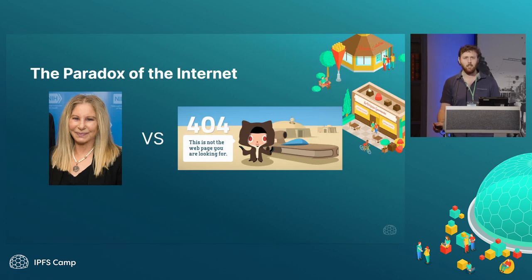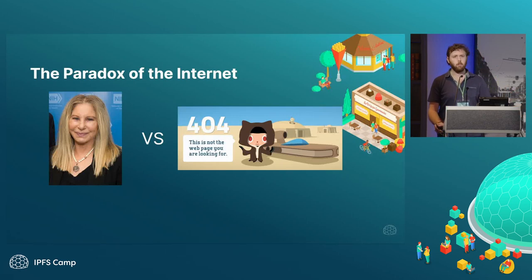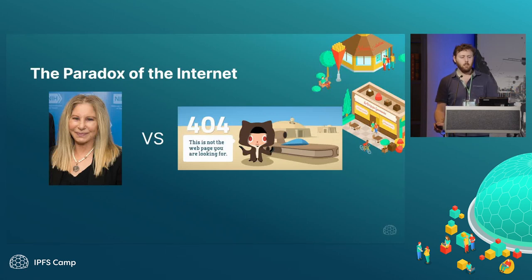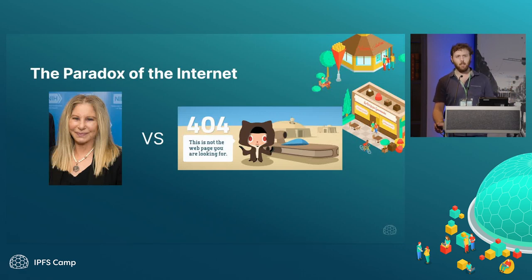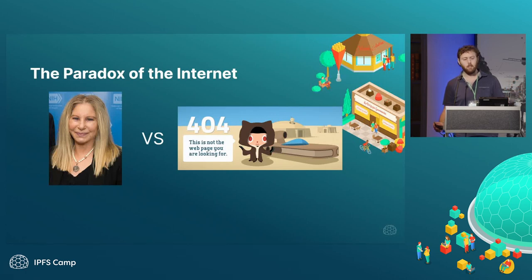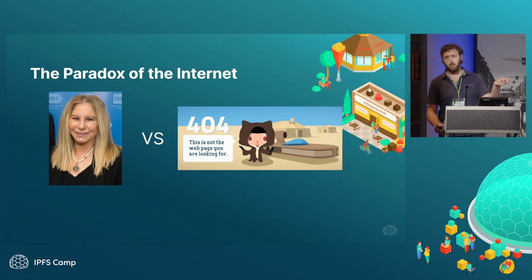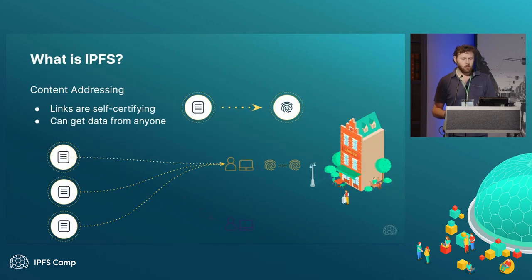One answer for this is that the way we refer to information is based on where it is, or based on a specific custodian who is in charge of making the data available. Like imager.com slash cat picture — it's imager's responsibility to make that cat picture available. So lots of people can make it available, which makes it hard to stomp out. But the one you were looking for, the link you clicked on, is gone.